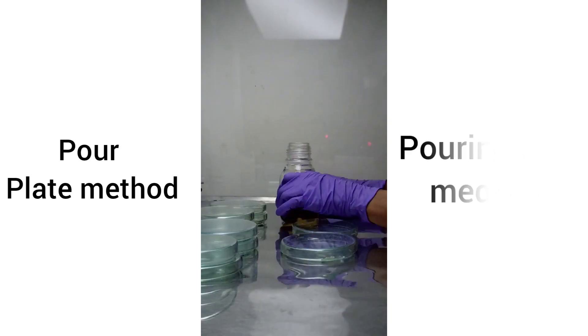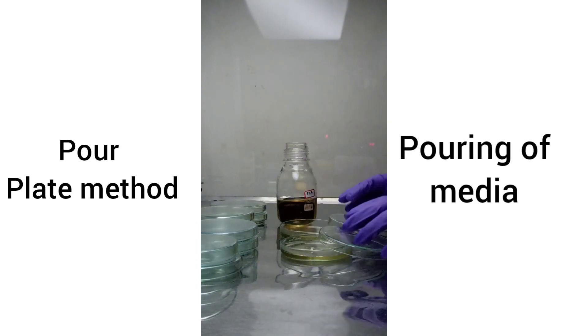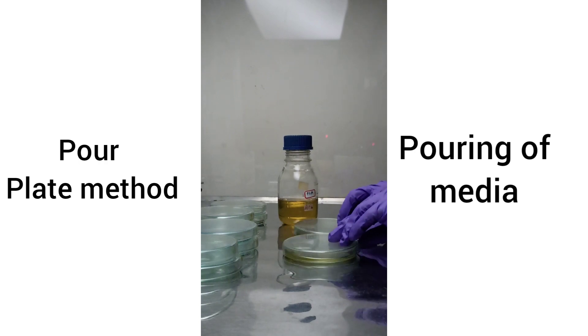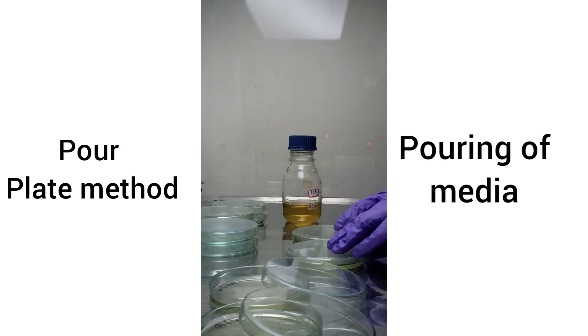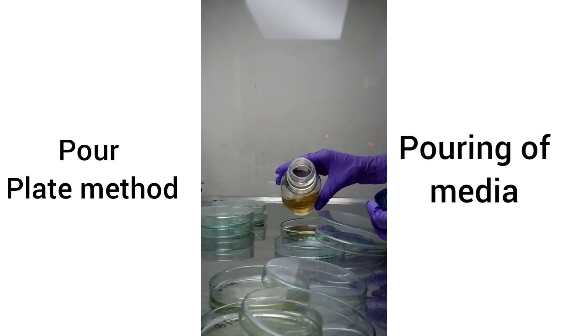After the transfer of sample, take the media which was maintained at 45 degrees Celsius. Add to the petri plates and swirl the plates in clockwise and anti-clockwise direction and keep it for solidification.